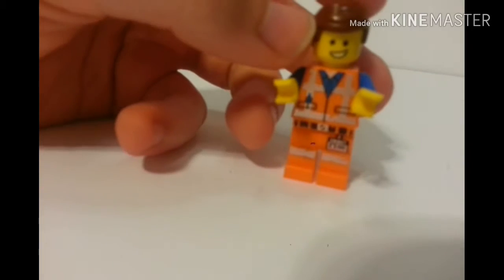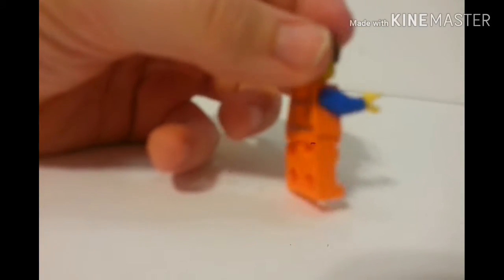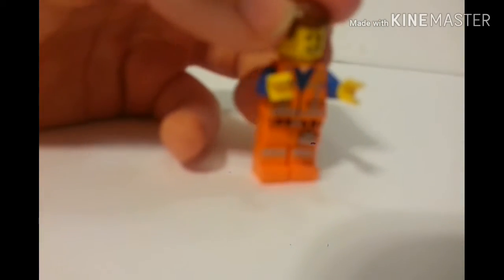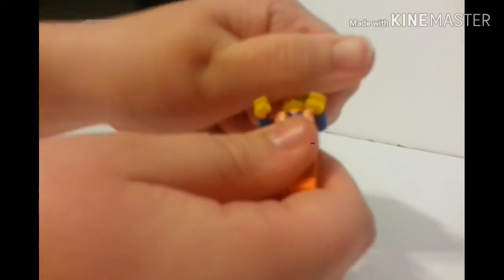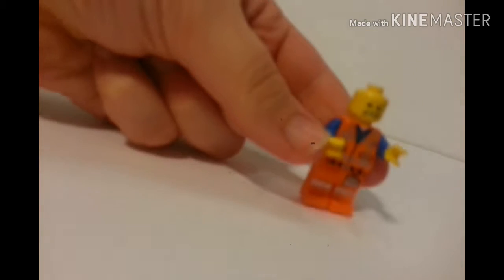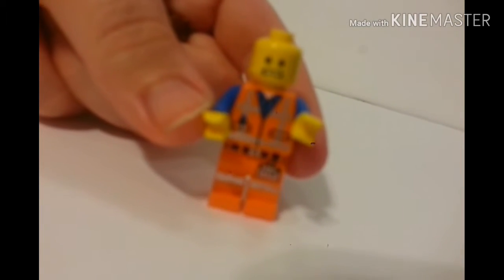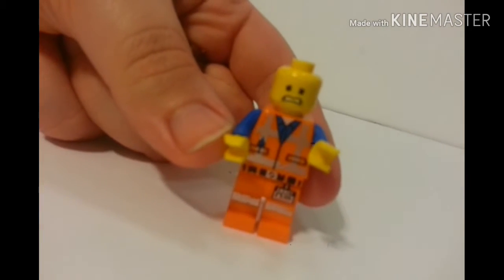Emmett has the normal Emmett pants, normal Emmett shirt. Well they are a bit weathered but the normal Lego Movie 2. For his face he has a double-sided face, there's one smiling and one where he looks kind of nervous. His hair is just the normal Emmett hair.